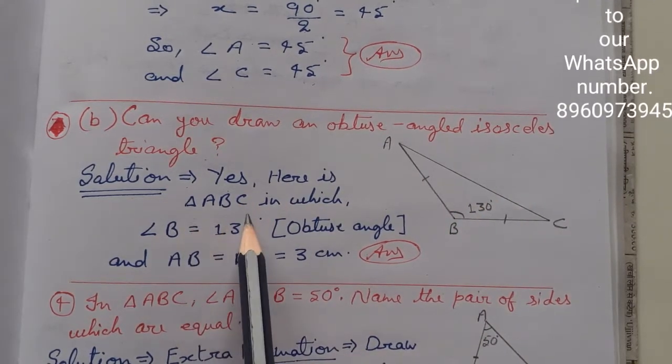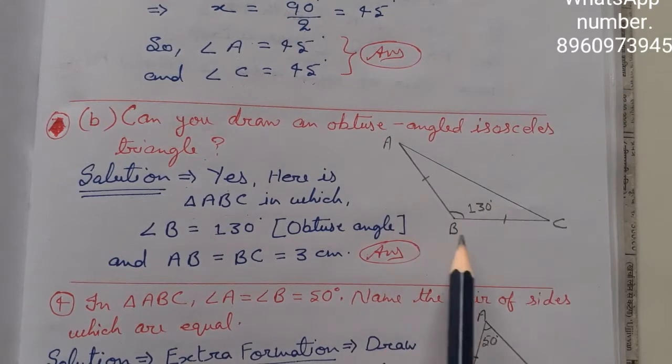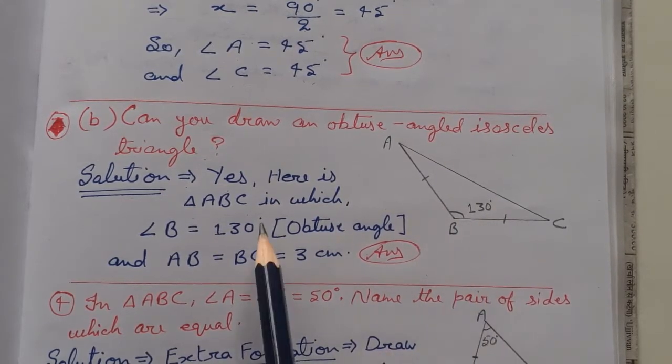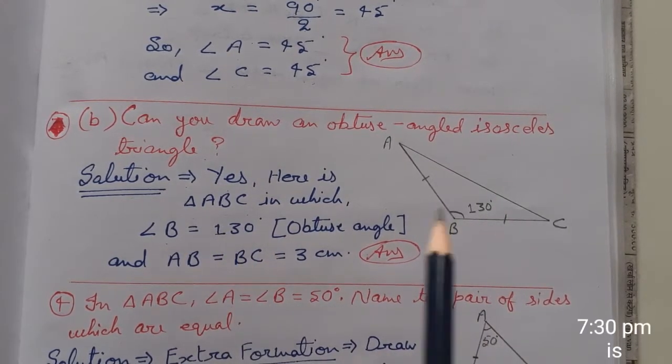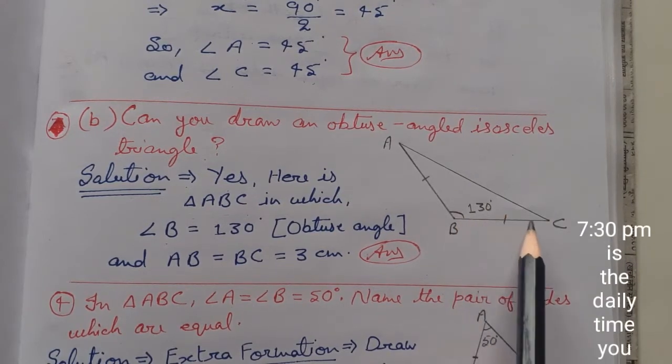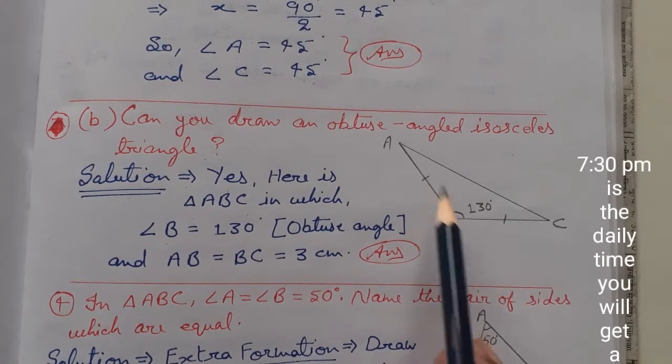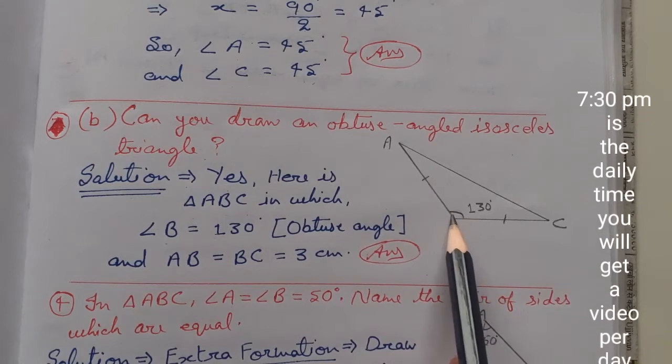Here is triangle ABC. Here I have drawn a triangle ABC in which angle B is 130 degrees. This I have not measured exactly, but according to the opening, I can see that it is 130 degrees.